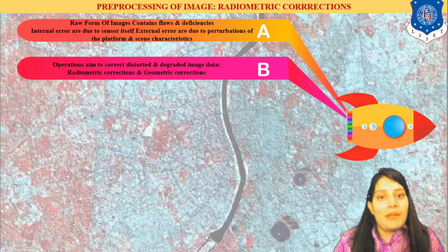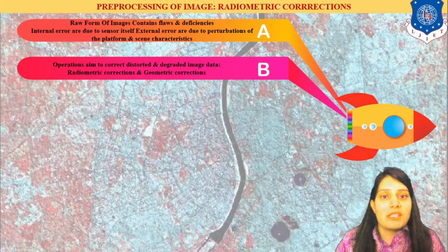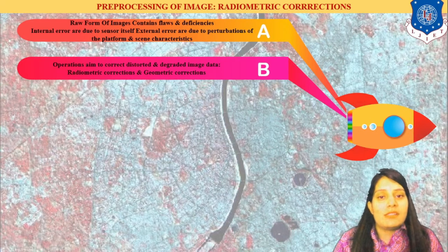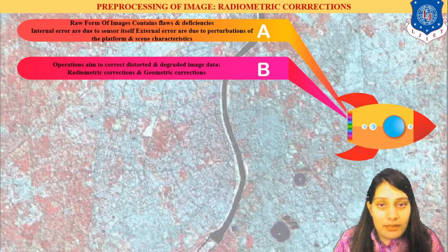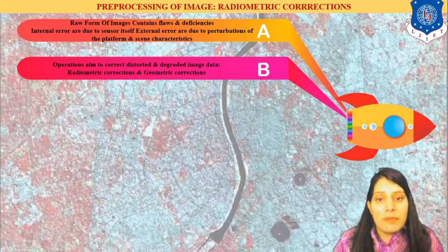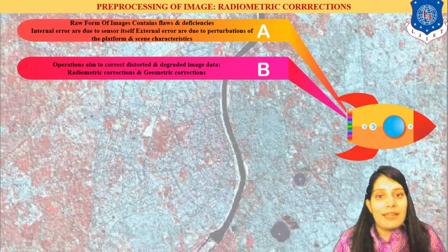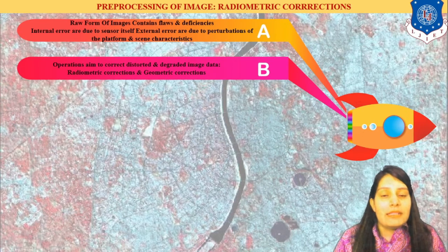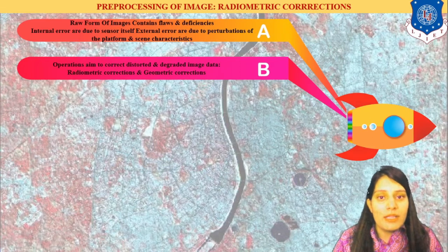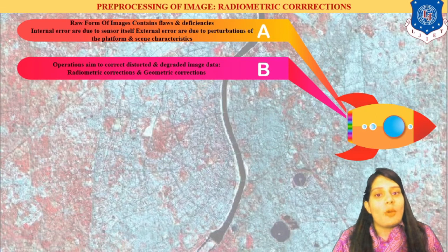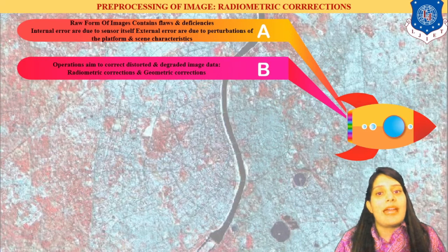Radiometric correction addresses flaws and deficiencies in the image. These may be due to the illumination source, sensor error, or atmospheric error through which the sensor captures energy. There are two types of error: internal error and external error. Internally, sensors have some deficiency which needs to be calibrated before use. External sources relate to geometric corrections and something related to the satellite platforms.